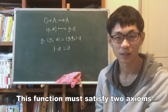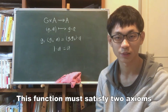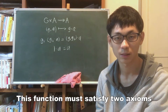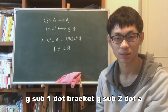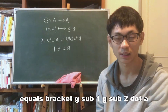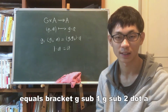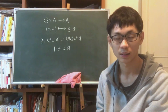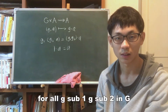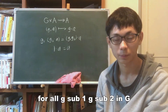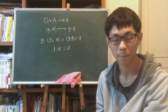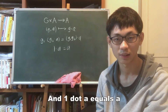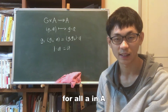This function must satisfy two axioms: g₁ · (g₂ · a) = (g₁g₂) · a for all g₁, g₂ in G and a in A, and 1 · a = a for all a in A.